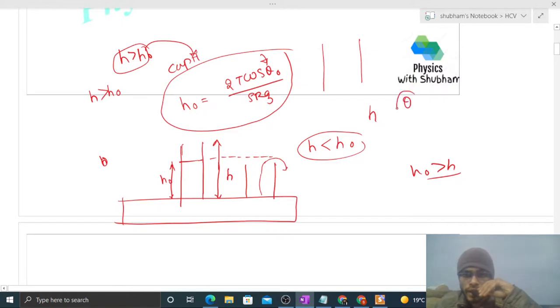Rather, what will happen is that theta, the contact angle, will adjust itself so that this equation becomes h equals 2T cos theta divided by rho rg. This means the height of liquid in the capillary tube will be simply small h, and theta, the contact angle between the liquid and the capillary tube, will change. It will adjust itself.